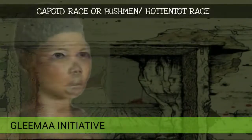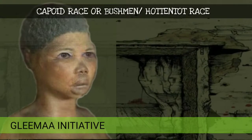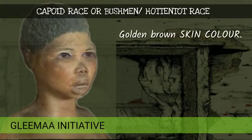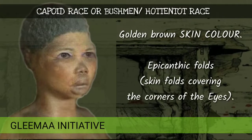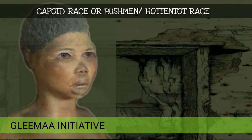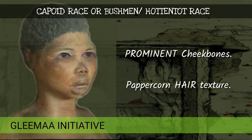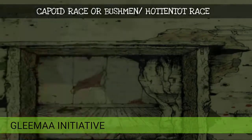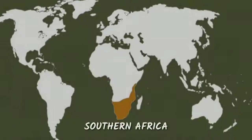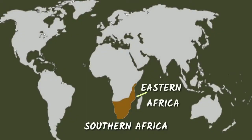Capoid race, which we call Bushmen or Hottentot race: golden brown skin color, epicanthic folds are observed — that is the skin folds covering the corners of the eyes — prominent cheekbones, and peppercorn hair texture. They are found in Southern and Eastern Africa.